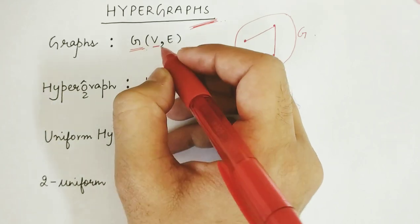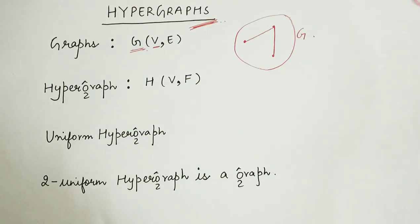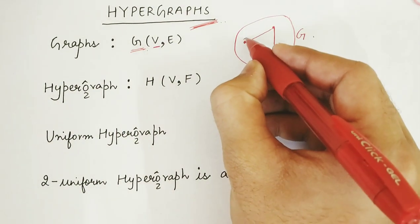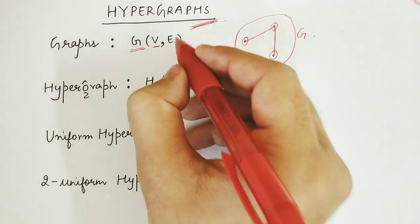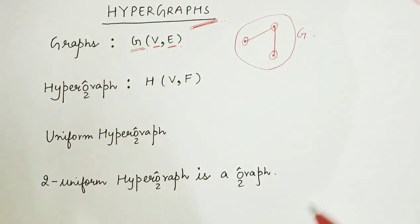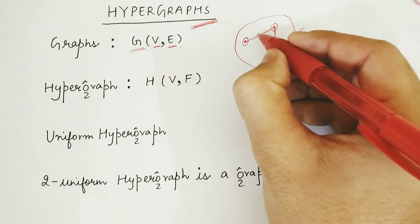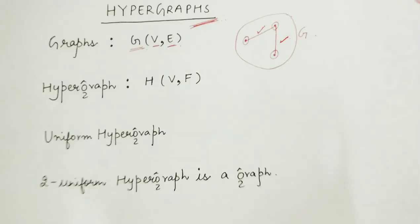This V represents the set of vertices which are this, this and this. And E represents the set of edges which are this and this.